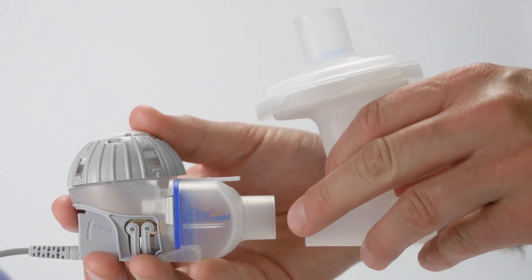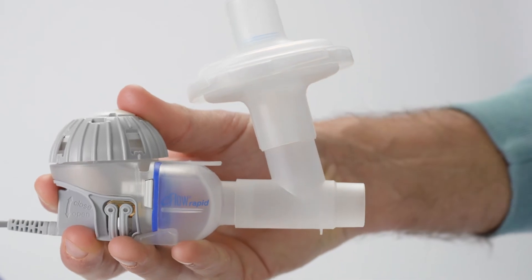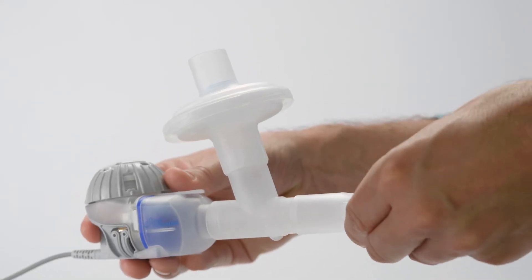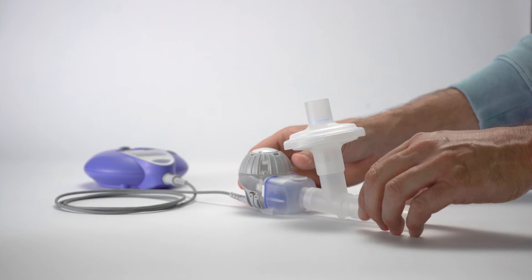Connect the PARI filter valve set onto the e-flow rapid handset and connect the mouthpiece to the free end of the filter valve set.